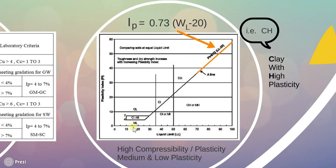If it is silt with low plasticity it is ML. If the liquid limit lies between 35 and 50% it will be intermediate plasticity: CI for clay with intermediate plasticity, OI for organic soil with intermediate plasticity, and MI for silt with intermediate plasticity. One more type is CL-ML, which lies in between CL and ML. So this is how 9 groups are divided on the basis of compressibility or plasticity. I conclude my lecture here.